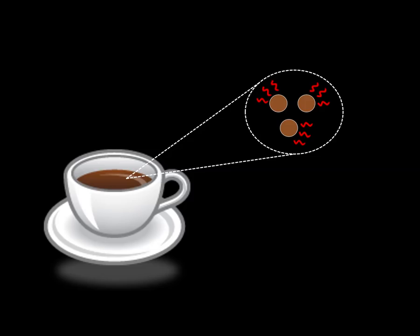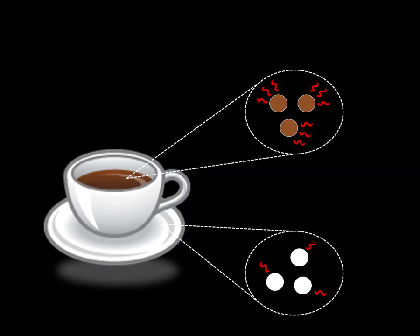The atoms that make up the cup are not jiggling around as fast. So they only get one squiggly line. As the atoms that make up the coffee move around, they bump into the walls of the cup.